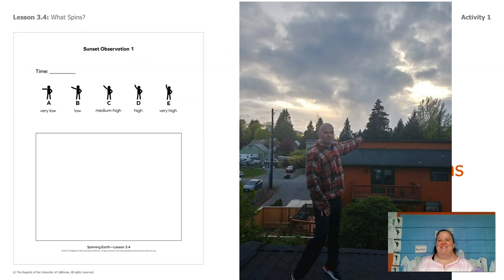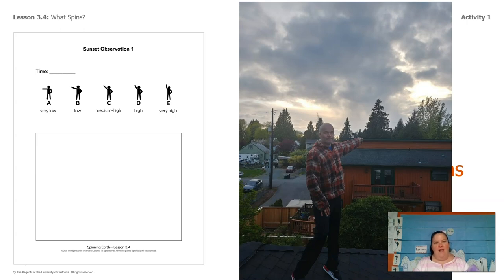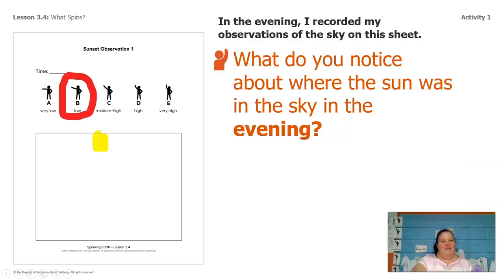So at about 7:30 last night, I had my husband go out and point to where the sun was in the sky — I actually did it right after dinner. Would you say he's pointing to very low, low, medium high, high, or very high? What do you guys think? Me and Lavender had a disagreement about this, so any answer is okay for this one. I thought it was low. She thought it was very low.